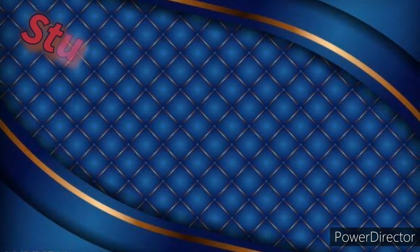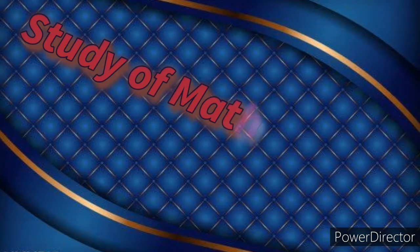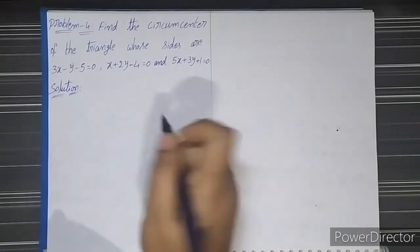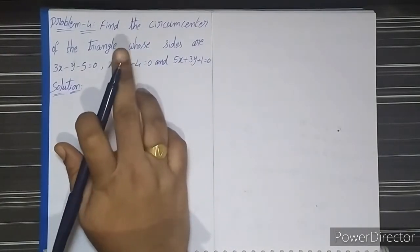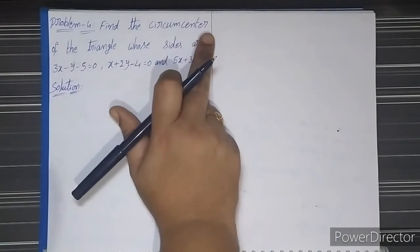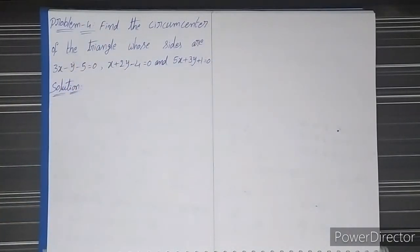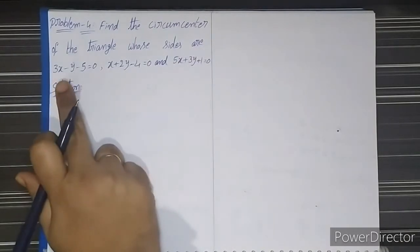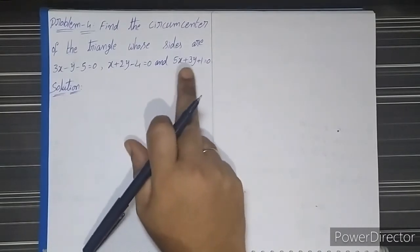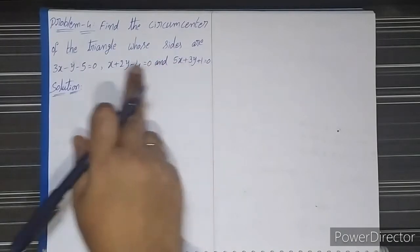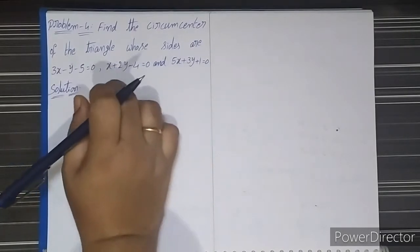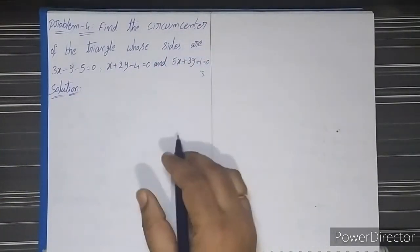Hi, hello friends, welcome to our channel Study of Mathematics. Next we will go to another problem: Solve Problems 3.11.5, Problem Number 4. The problem is: find the circumcenter of the triangle whose sides are 3x − y − 5 = 0, x + 2y − 4 = 0, and 5x + 3y + 1 = 0. By using these three side equations we have to find the circumcenter, denoted capital S.